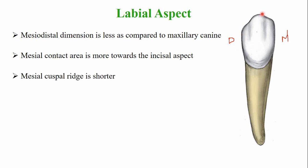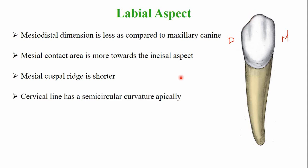The mesial cuspal ridge, extending from the cusp tip to the mesial surface, is shorter compared to the distal cuspal slope, which is larger in dimension. The cervical line shows a semicircular curvature towards the root apex, a feature common to all anterior teeth.